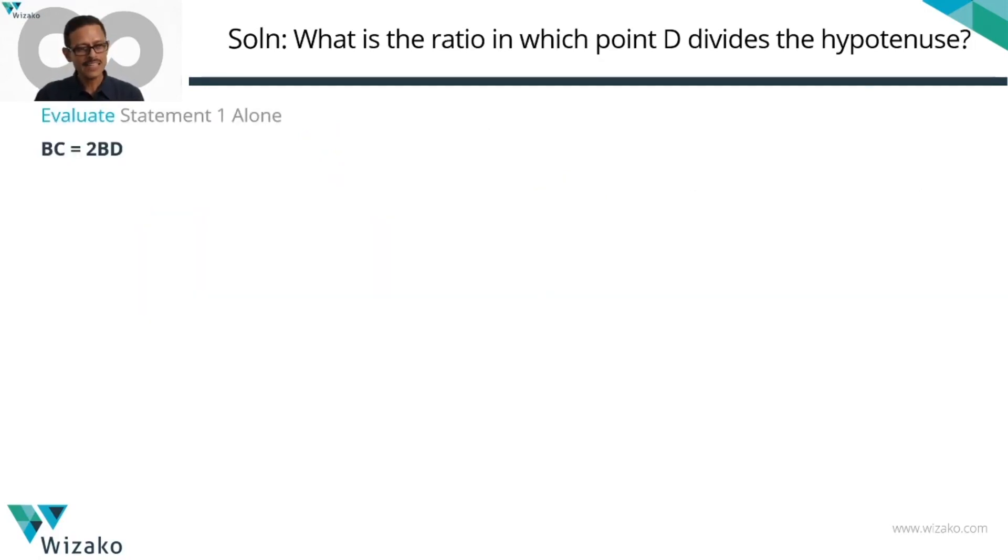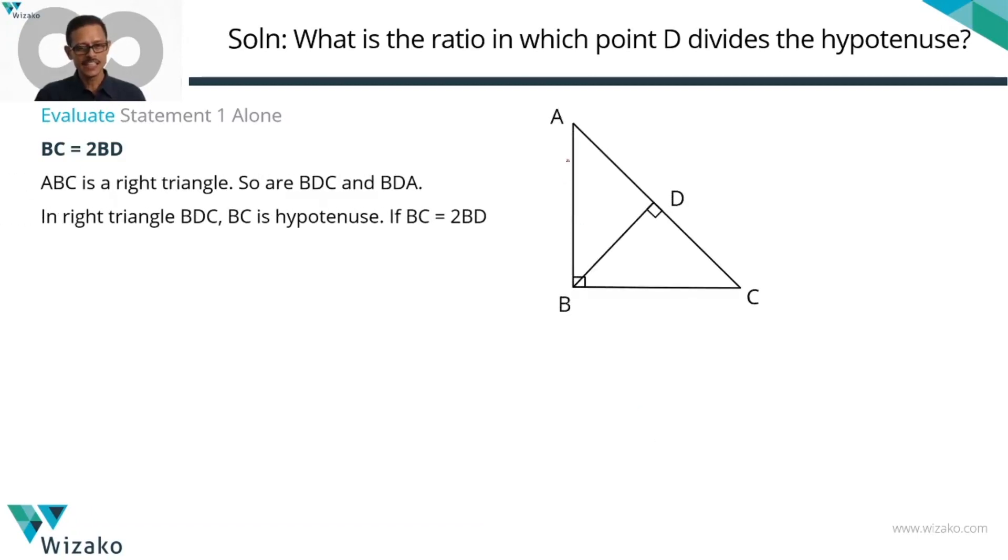Start with statement 1. It says BC equals 2BD. Let's get started with this right triangle. ABC is the right triangle. AC is the hypotenuse. Obviously, right angle is at B. D is dividing this hypotenuse AC. We need to figure out what is this ratio AD is to DC. That's our objective.